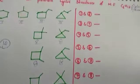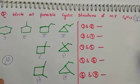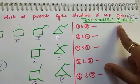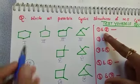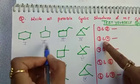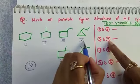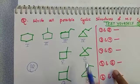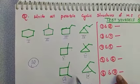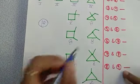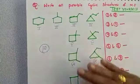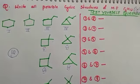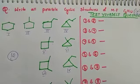Now for the test-yourself question: find the relationship between structures 1 and 2, then 2 and 3, then 3 and 4, 4 and 5, 5 and 6, 6 and 7, 7 and 8, and 8 and 9. Practice finding the relation between all of these and comment your answers. I will give the answer link in the description box. I hope you liked this video — thanks for watching.